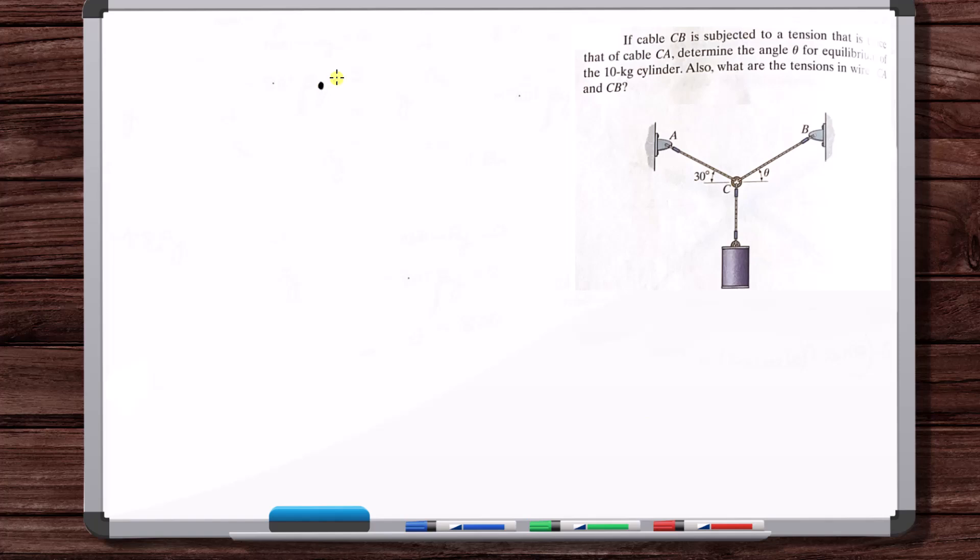And also, this is a type of problem where all of the forces that we deal with are coplanar. All right, so if cable CB is subjected to a tension that is twice that of cable CA, determine the angle theta for equilibrium of the 10 kilogram cylinder. Also, what are the tensions in wires CA and CB?